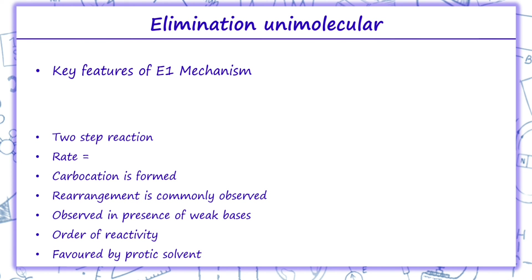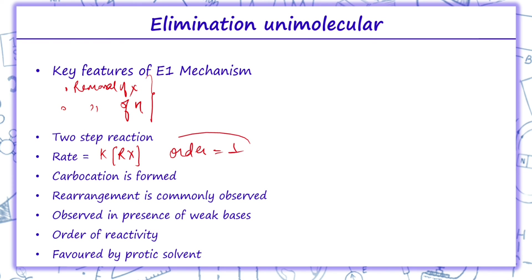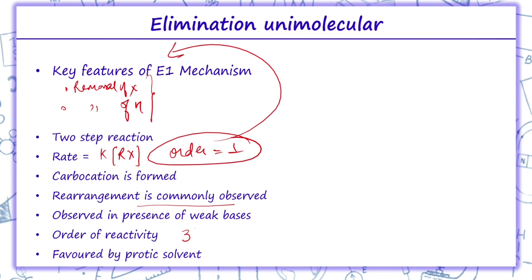E1, unimolecular elimination, is a two-step reaction. First, X is eliminated forming a carbocation, then H is removed in the second step. The first step is the slowest and is the rate-determining step, so the rate depends only on the alkyl halide and the order is 1 — hence called E1. Carbocations are formed and rearrangement is observed. It occurs in the presence of weak bases. Order of reactivity is tertiary > secondary > primary, and it is favored by protic solvents.